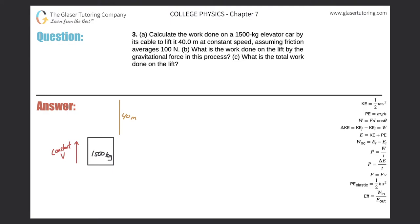Number three, letter A. Calculate the work done on a 1500 kilogram elevator car by its cable to lift it 40 meters at constant speed, assuming friction averages 100 newtons. All right, so here's our elevator car. It's moving at constant velocity, I'm going to assume upwards, and it's going to travel 40 meters.